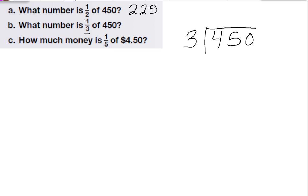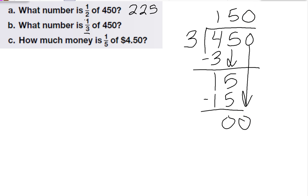3 goes into 4 1 time, 3 times 1 is 3, subtract, bring down the 5. 3 goes into 15 5 times, that's 15, subtract, bring down the 0. 3 goes into 0 0 times. So 1 third of 450 is 150.